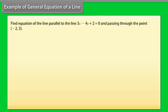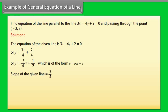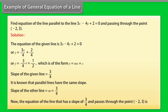Example: Find the equation of the line parallel to 3x − 4y + 2 = 0 and passing through the point (−2, 3). Solution: The given line y = (3/4)x + 1/2 has slope 3/4. Since parallel lines have the same slope, the required line also has slope m = 3/4. The equation of the line with slope 3/4 passing through (−2, 3) is 3x − 4y + 18 = 0.